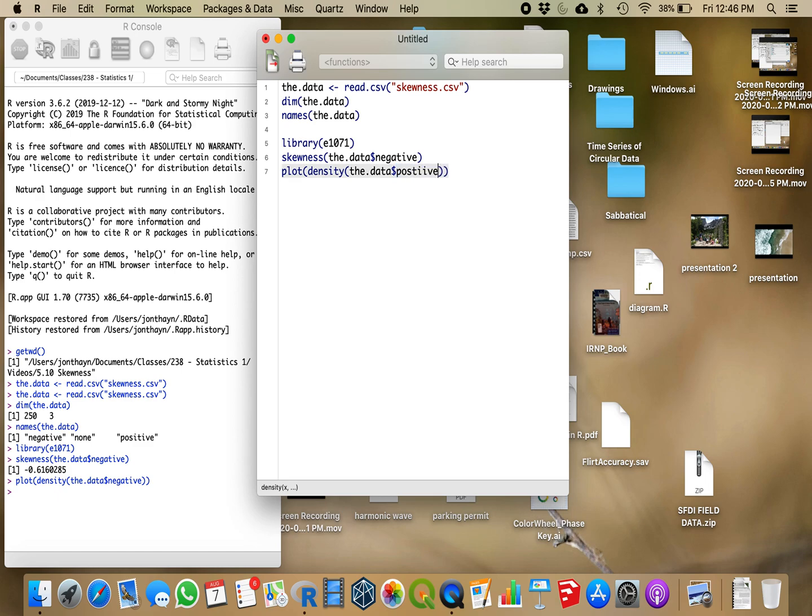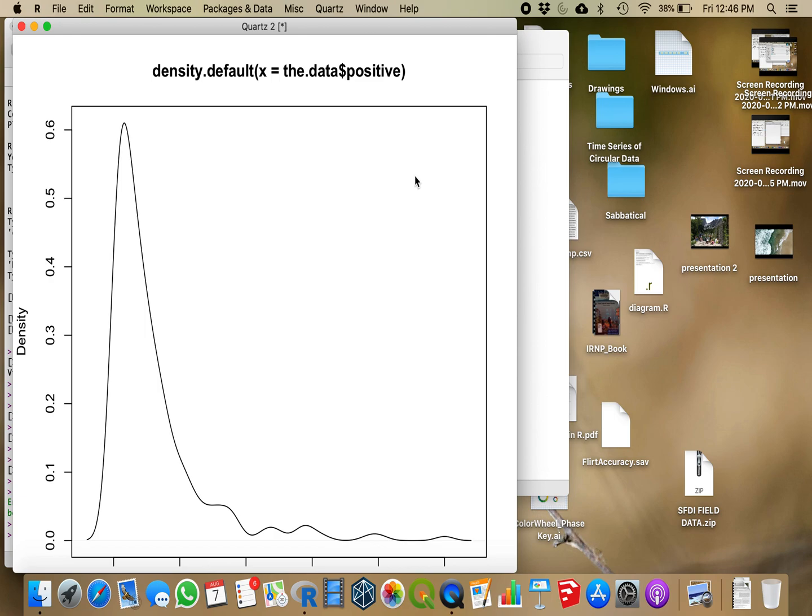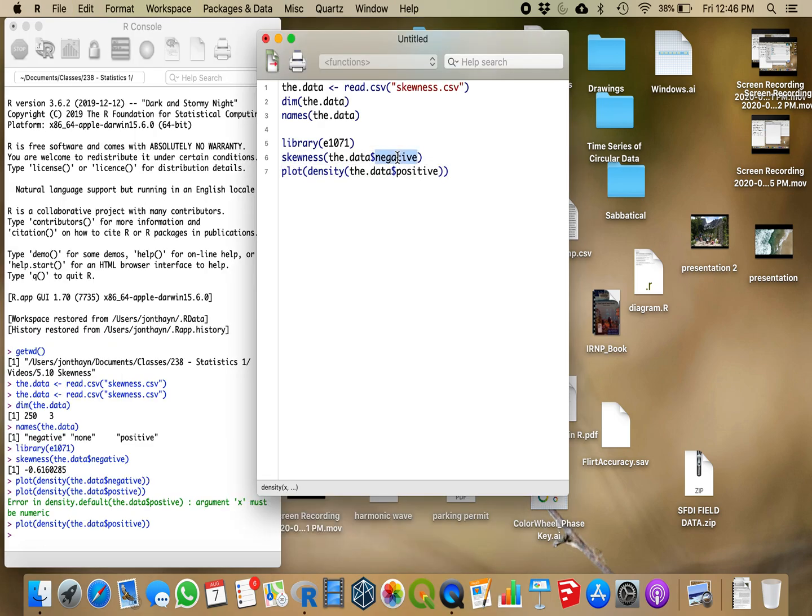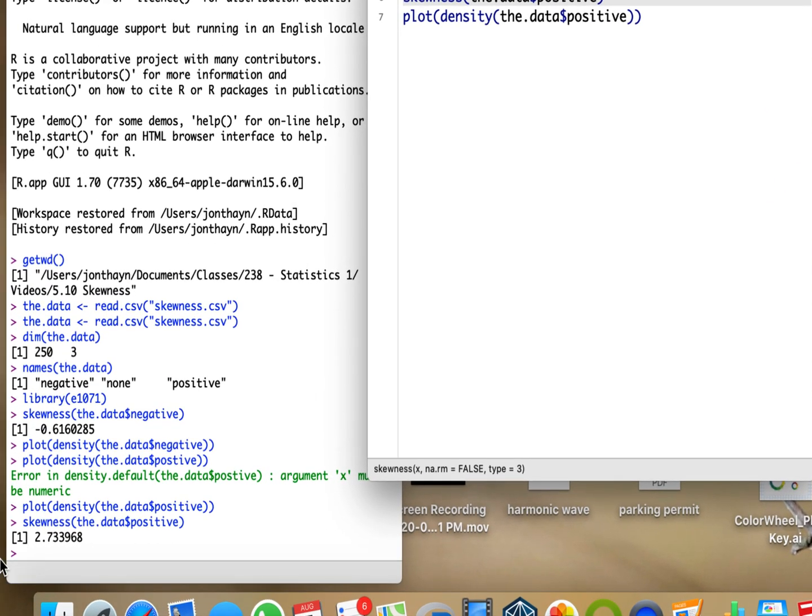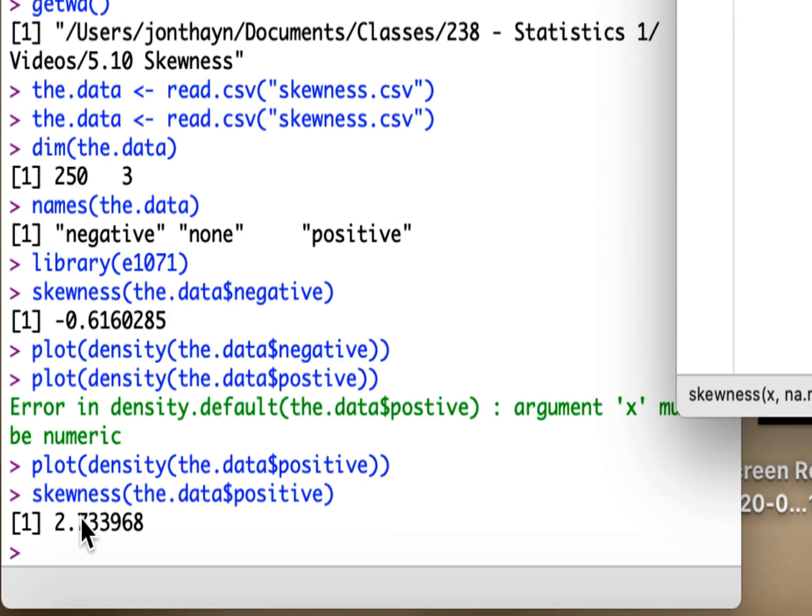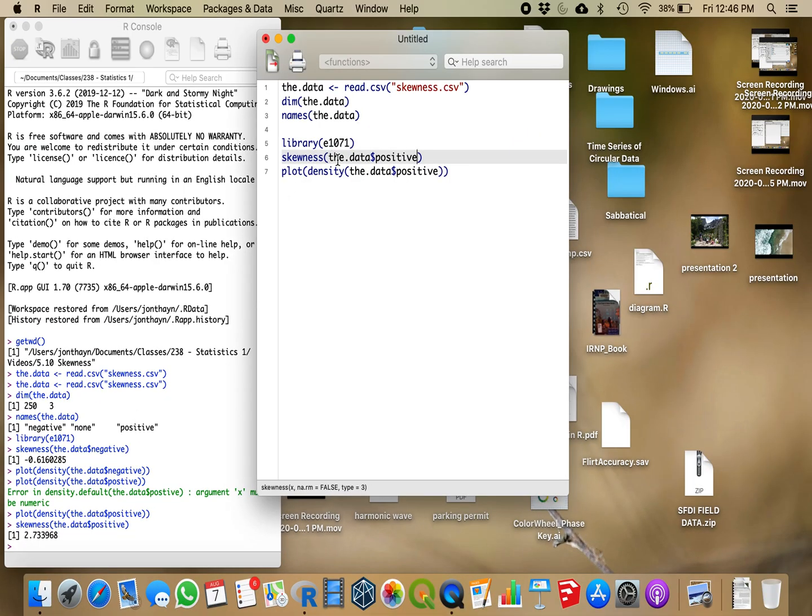We can also take a look at the positive skew. That needs an I there, has to be spelled right. We have a lot of positive skew there. So I would assume we have a very large number for skewness here, 2.734. So clearly we have a lot of skew there.